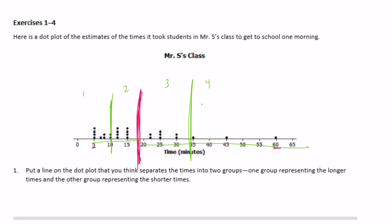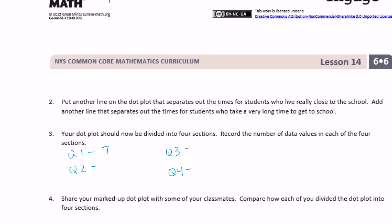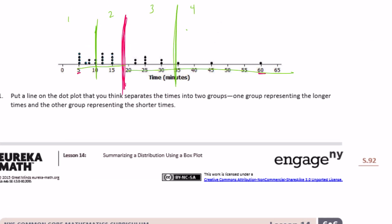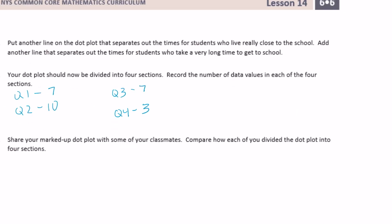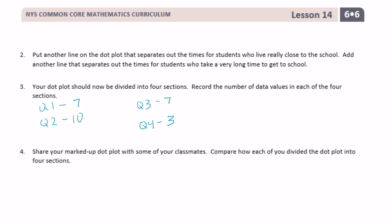Quartile two, I had one, two, three, four, five, six, seven, eight, nine, ten. Quartile three, I had one, two, three, four, five, six, seven. And quartile four, I had three. Yours could be different, but probably around the same amount.